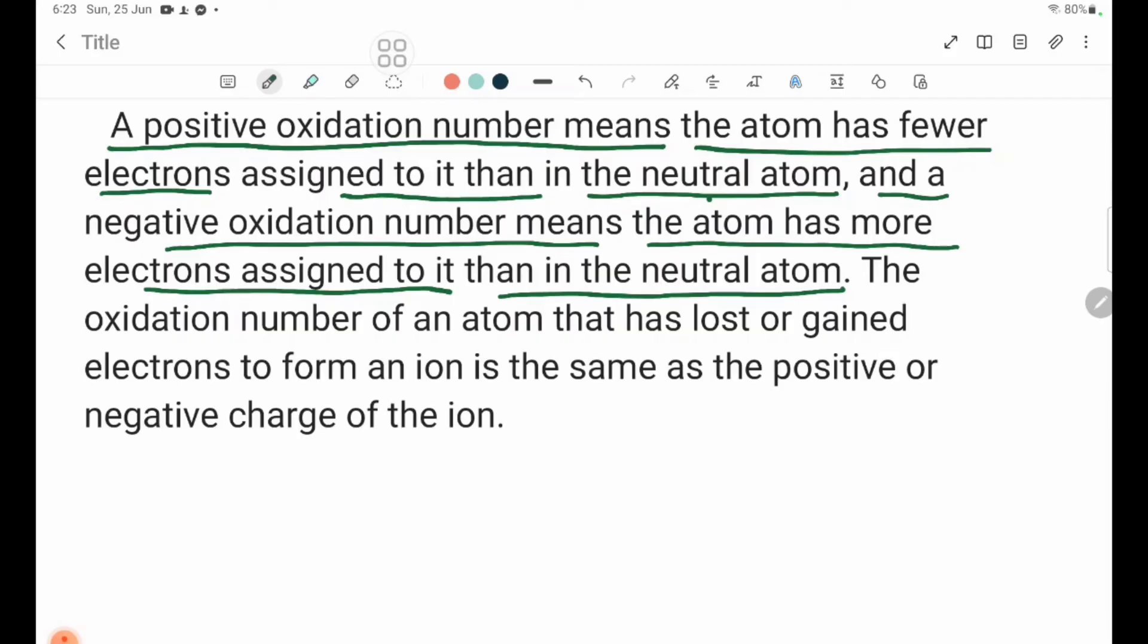A negative oxidation number means the atom has more electrons assigned to it than in the neutral atom. The oxidation number of an atom that has lost or gained electrons to form an ion is the same as the positive or negative charge of the ion.